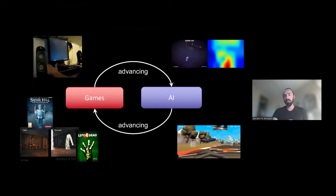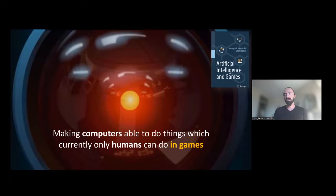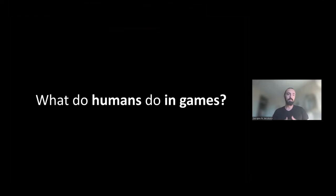Let us define the domain. What is artificial intelligence in games? It is the study of making computers able to do things which currently only humans can do in games, which naturally brings us to the question: what do humans do in games? I clustered all these possible responses to the following three, starting with play. Obviously we play games, this is the most dominant thing we do with games.